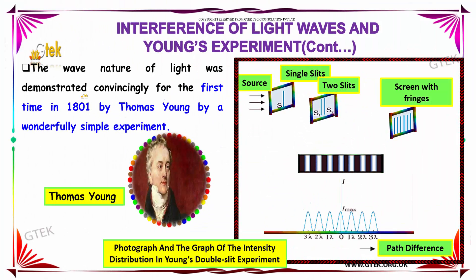The wave nature of light was demonstrated convincingly for the first time in 1801 by Mr. Thomas Young with a wonderfully simple experiment.